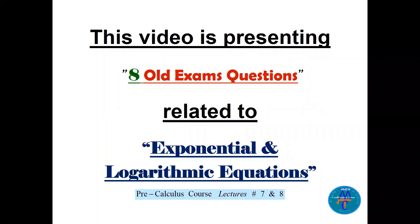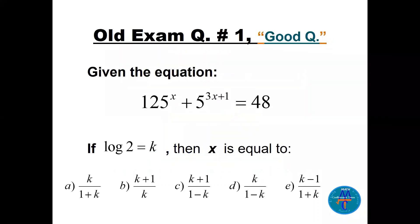This video presents eight old exam questions related to exponential and logarithmic equations, from a pre-calculus course covering lectures seven and eight. Question number one: given the equation 125 to the power x plus 5 to the power (3x+1) equals 48, and given that log of 2 equals k, we need to find x.